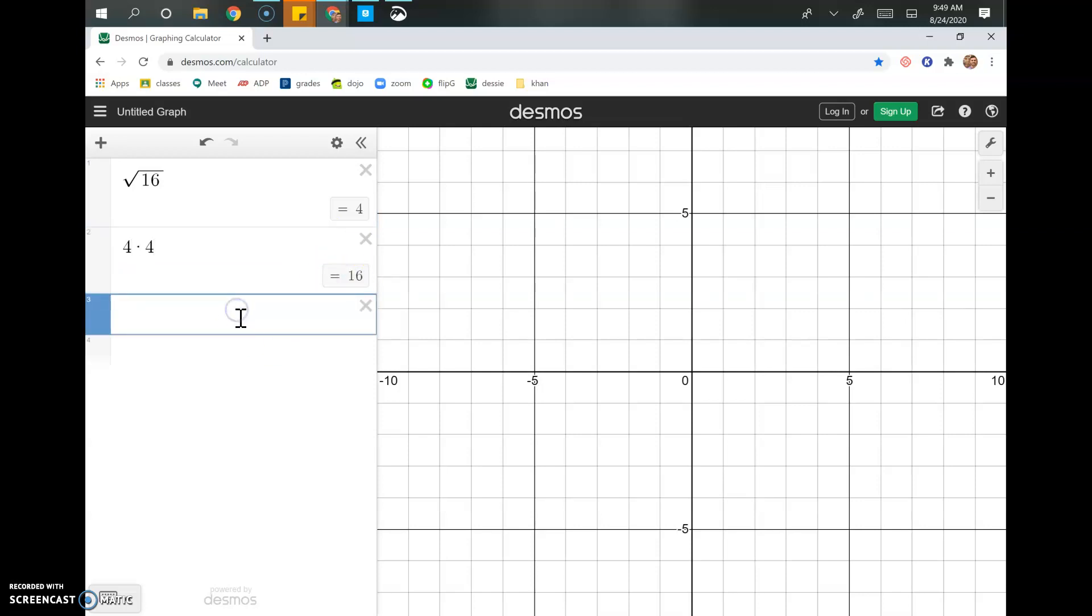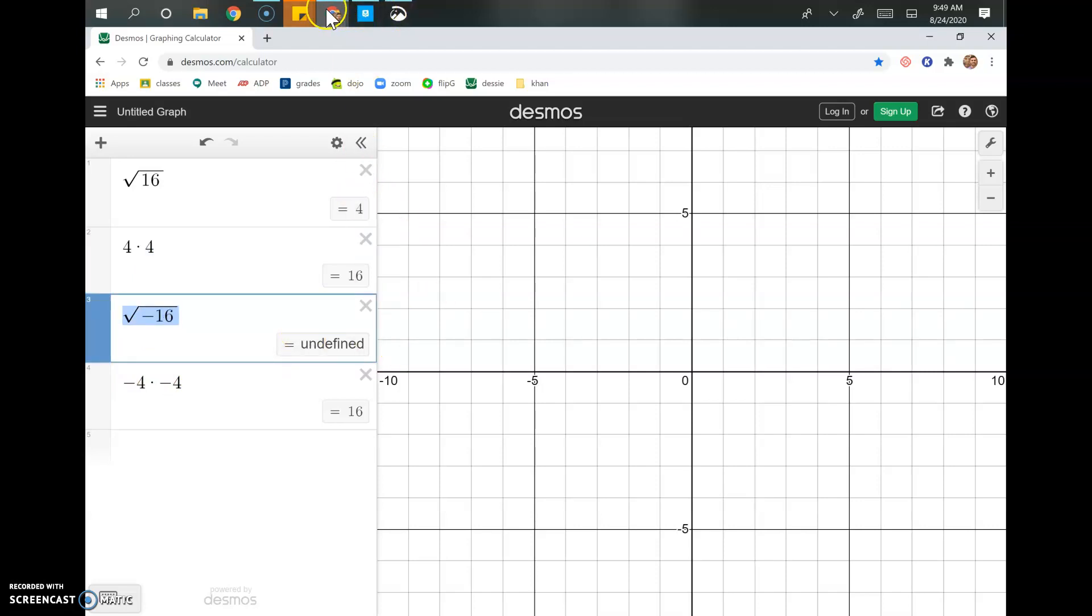Now when we take the square root of negative 16, you can see it's undefined because it's imaginary. We're trying to figure out what number times itself gives us negative 16, and negative 4 times negative 4, which is what most students are gonna say, is actually positive 16. So the square root of 16 is actually the answer in principal form, which is the positive and the inverse, which is the negative. So you can't take the square root of a negative number, which is why we have imaginary numbers, and so that's what we're gonna do right now.